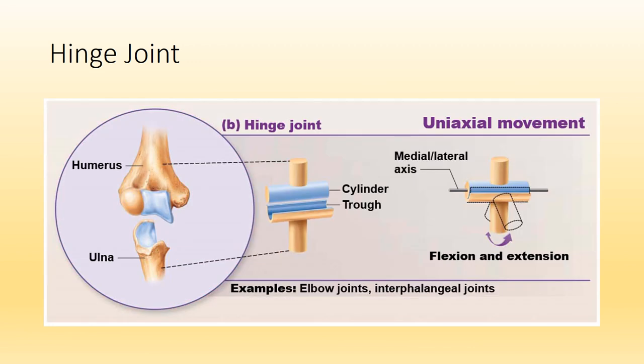A hinge joint — the best example will be the elbow joint, which allows for flexion and extension. We also have the interphalangeal joints, which occur between the phalanges in the fingers.